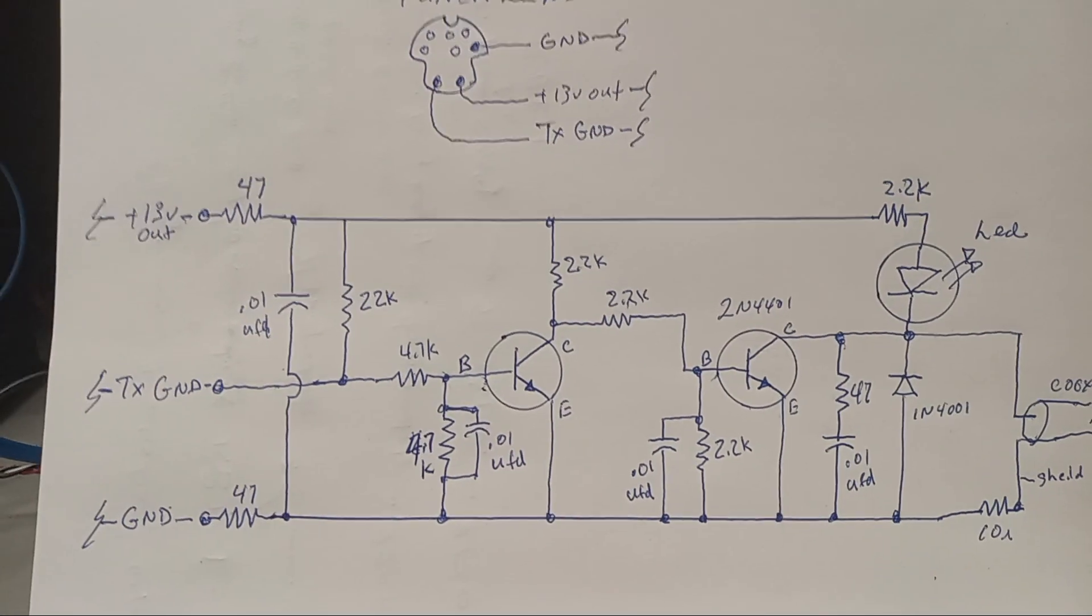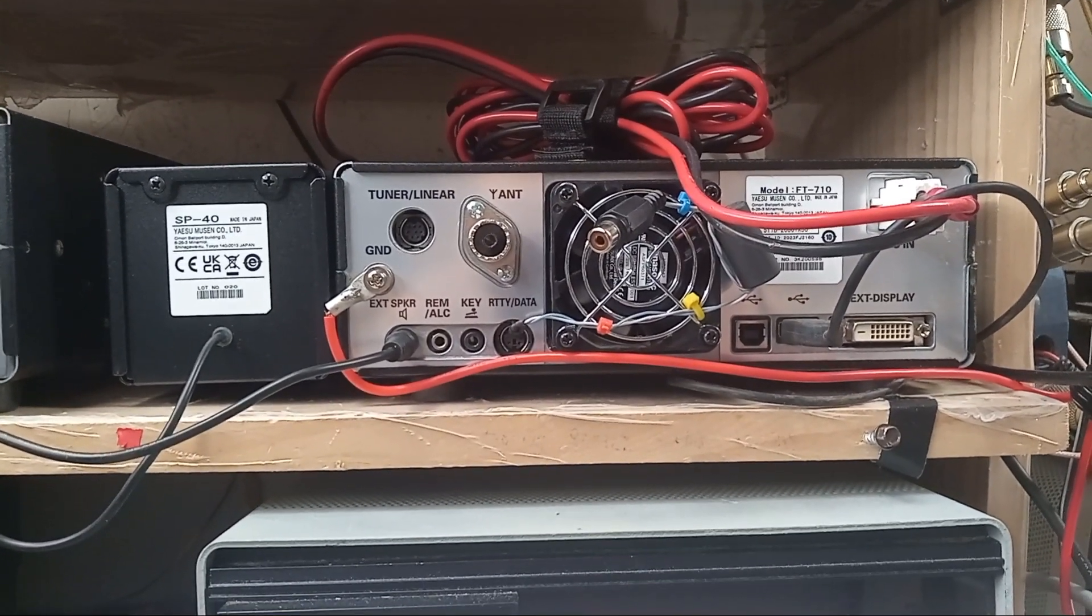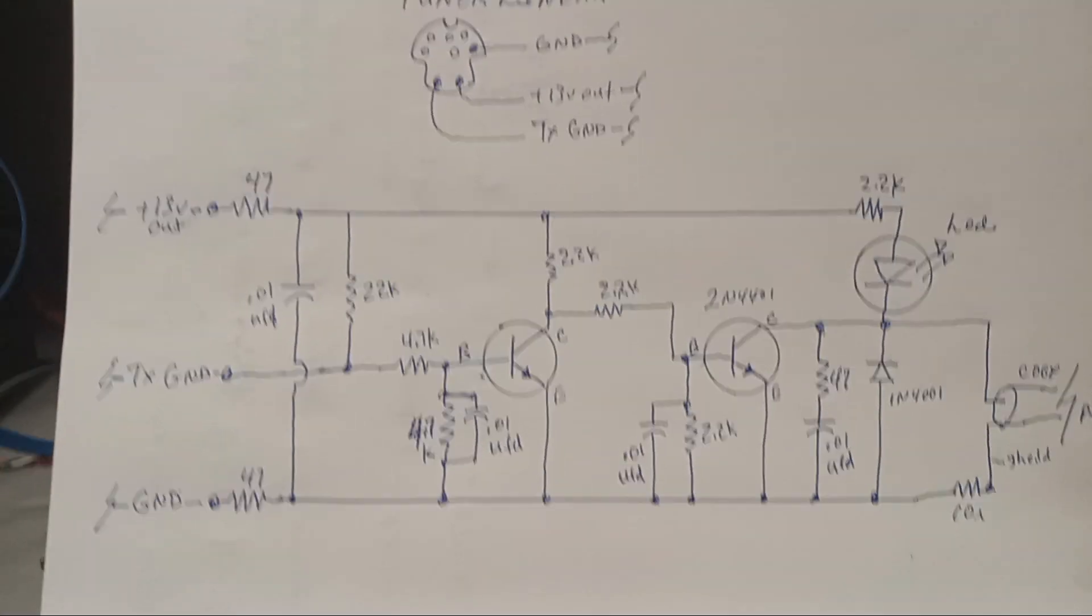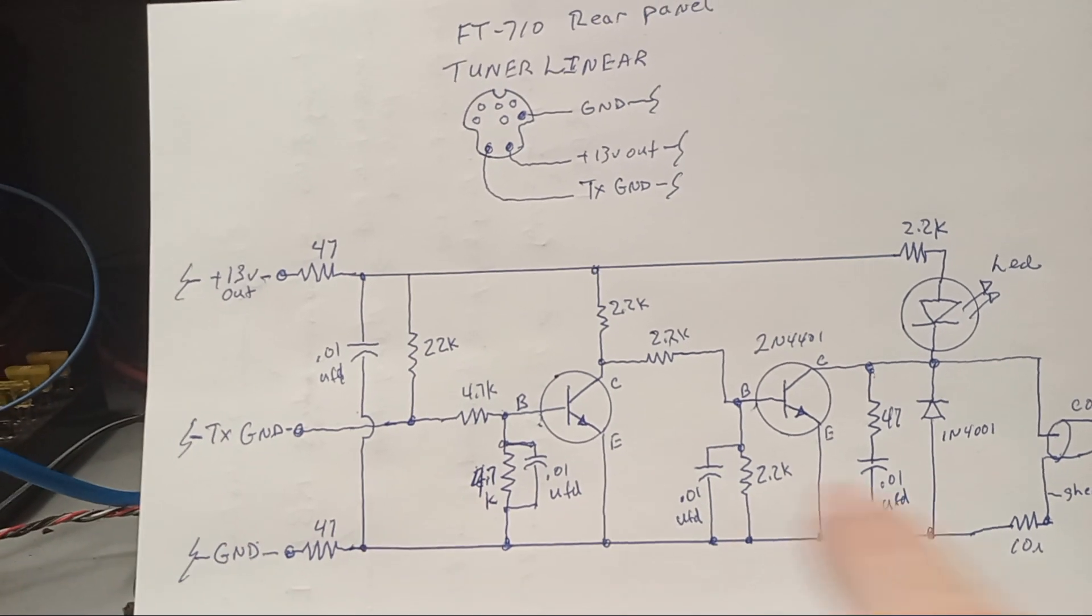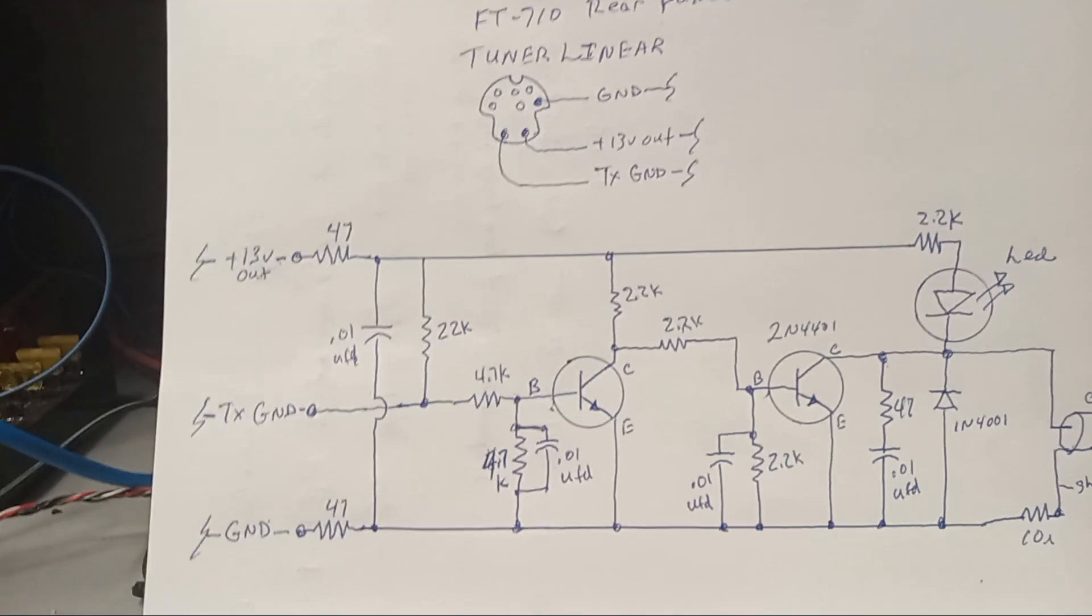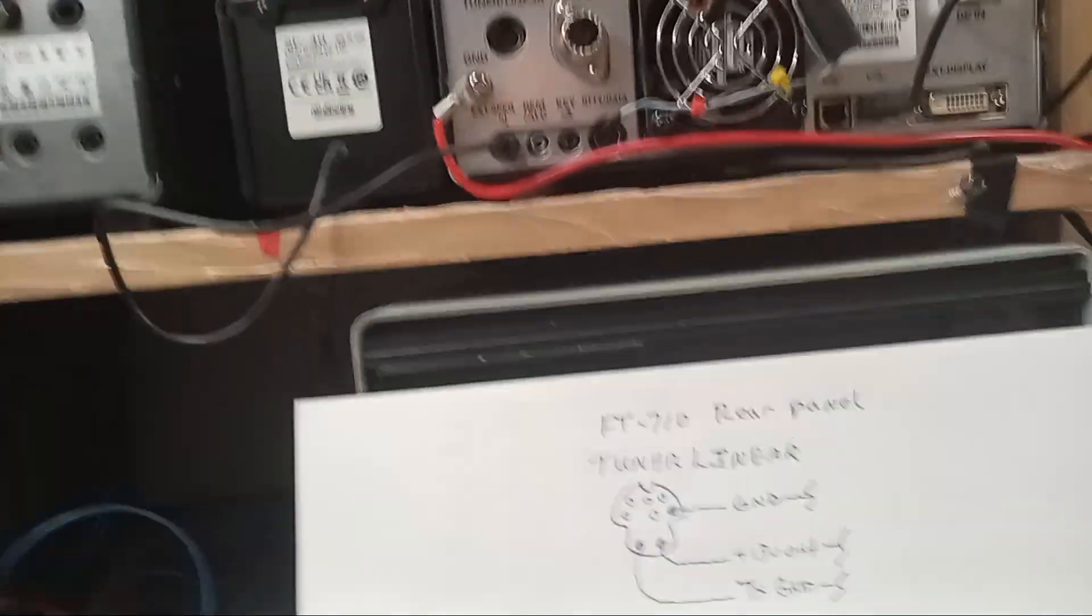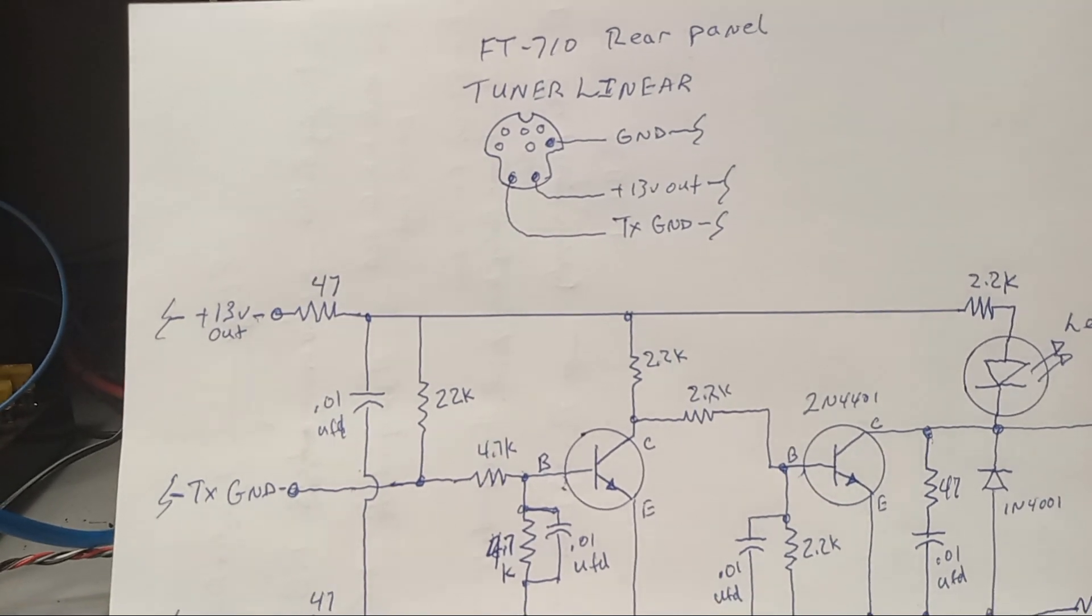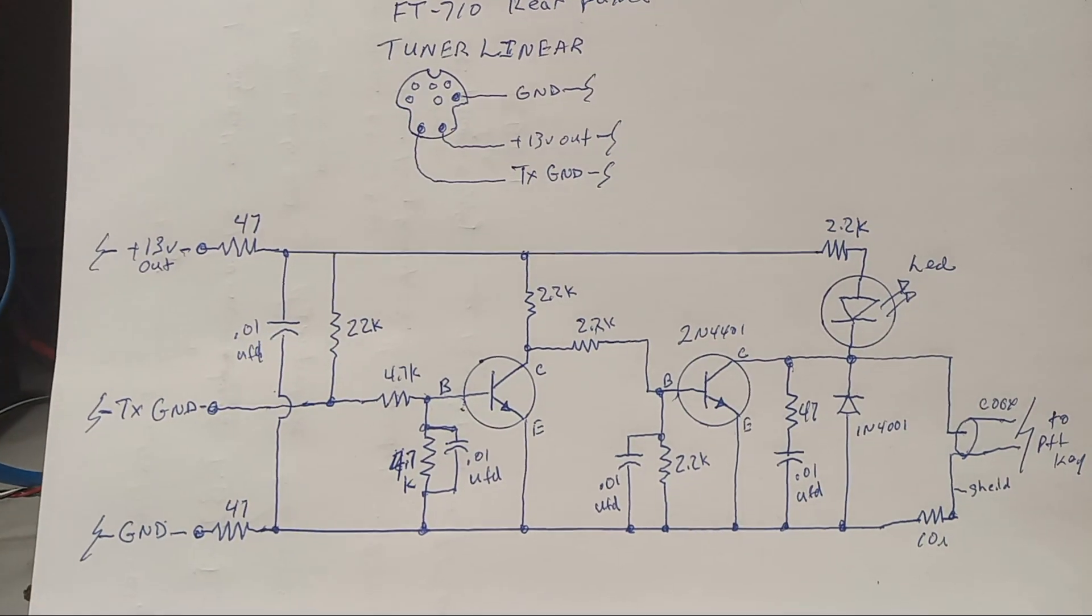So anyway, you got an amplifier and you got a brand new 710, be careful. Do your homework, get a hold of your amplifier manufacturer and try and find out if they've got a buffered input, it's built into your amplifier, something like this that will protect, something like that. And if they don't, ask them what they might recommend.